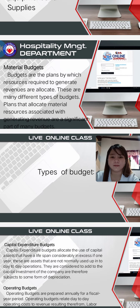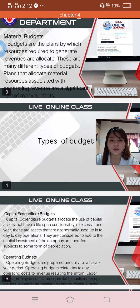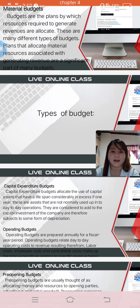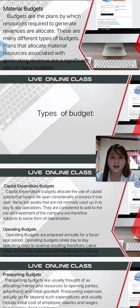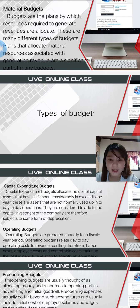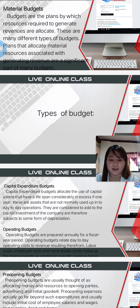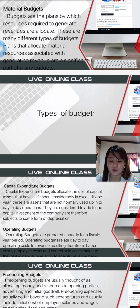Capital Expenditure Budgets allocate the use of capital assets that have a lifespan considered in excess of one year. These are assets that are not normally used up in day-to-day operations. A Capital Expenditure Budget is a formal plan that states the amounts and timing of fixed asset purchases by an organization. It can involve a wide array of expenditures, including upgrades to existing assets.